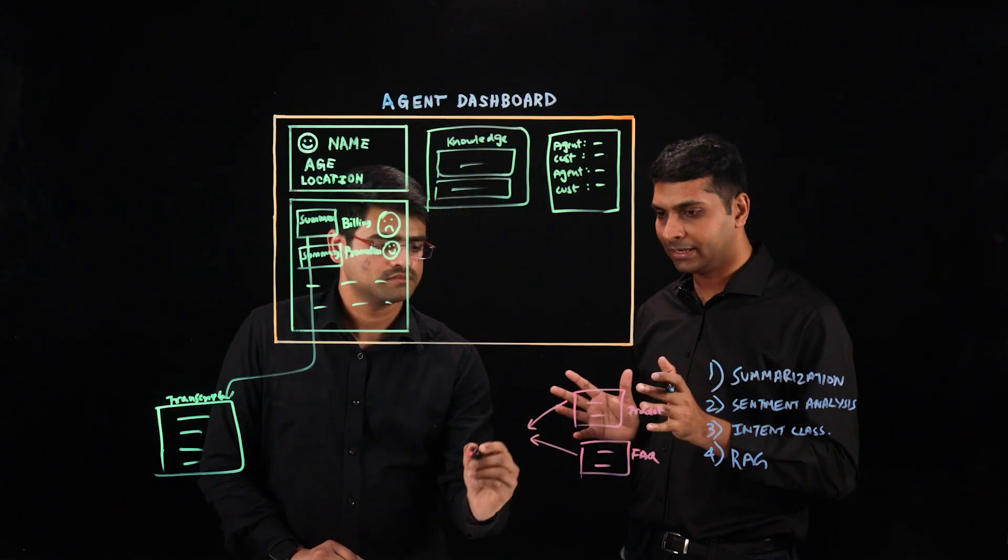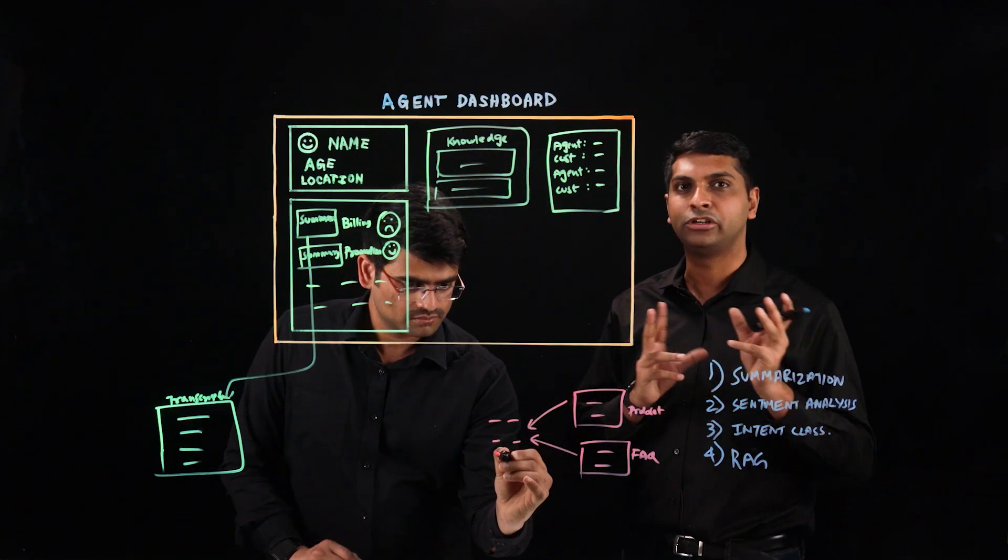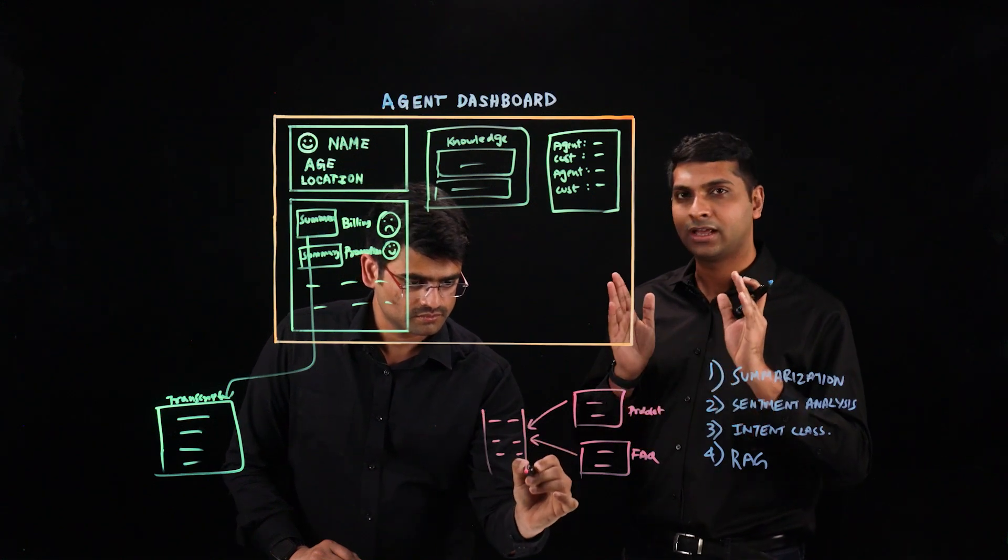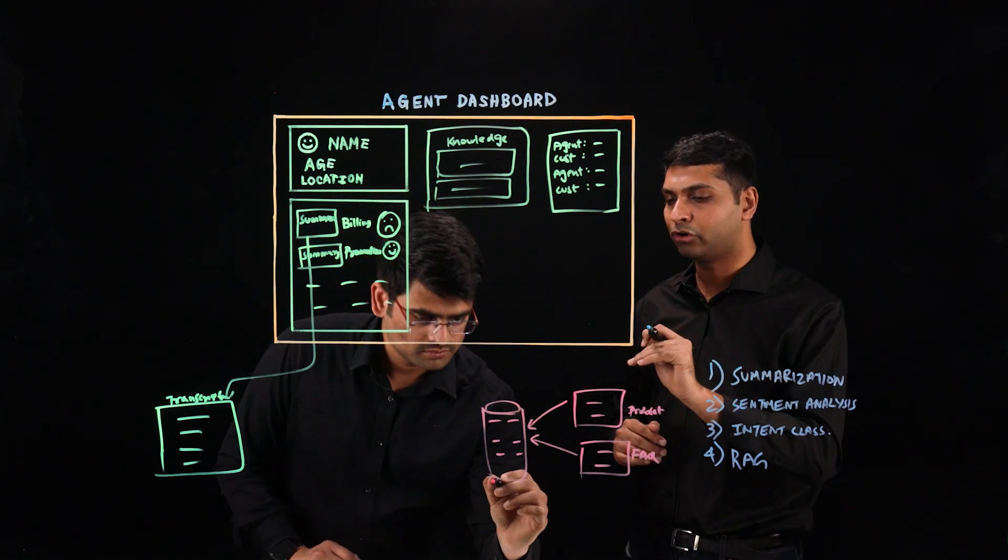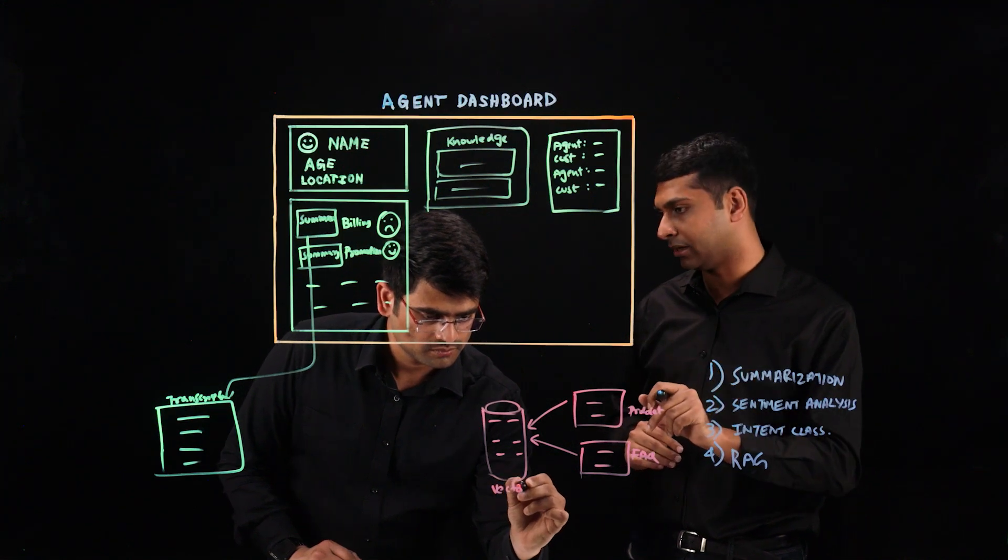All of this is text information, which can then be split up or chunked and sent to an embedding model. This embedding model can then convert all of this text into embeddings or vectors. It's really just numerical information, which can then be stored into a vector database.